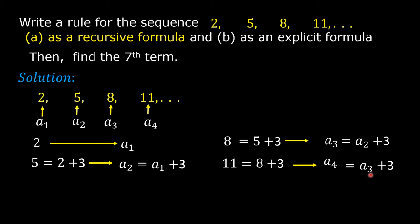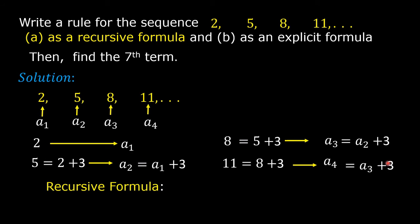The subscript 3 here is 1 less than 4. Now, if we replace 4 by n, then 3 is n minus 1. Similarly, subscript 2 is 1 less than 3, so if we replace that by n, it becomes n minus 1. So, the recursive formula is: a sub n equals a sub (n minus 1) plus 3, where a sub 1 equals 2.